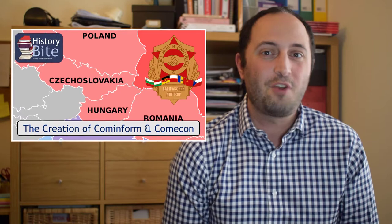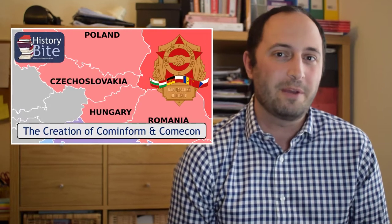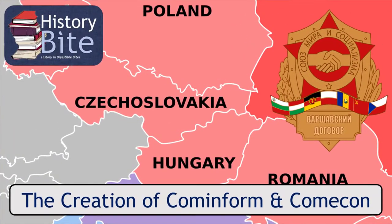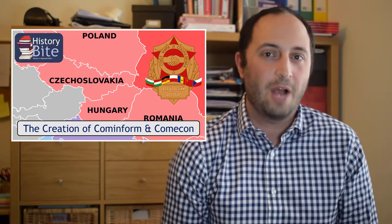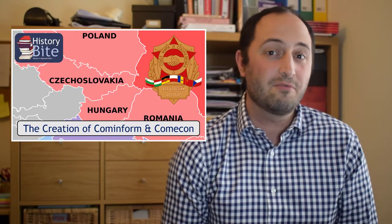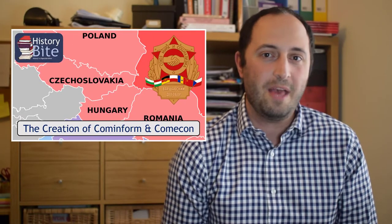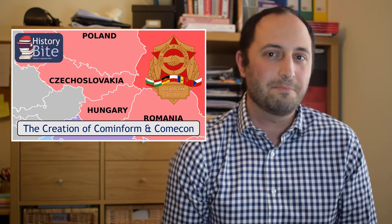Hello and welcome to History Byte, our Cold War series. Today we're talking about the USSR's creation of Cominform and Comecon, two organizations that would strengthen the USSR's hold over Eastern Europe, and would create a bigger rift between them and the Western powers.